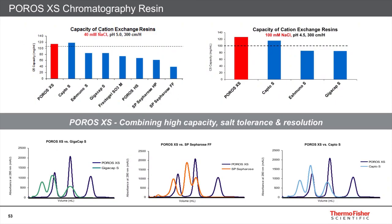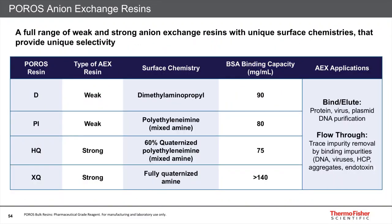We have four anion exchangers on Poros beads too: the PI with polyethylenimine mixed amine surface; the D with a diethylaminopropyl chemistry similar to DEAE; the HQ, which offers both weak and strong functionality by quaternizing the PI to 60%, combining the unique selectivity of weak anion exchangers with the high capacity of strong anion exchangers; and finally the Poros HQ, combining high capacity, high resolution, and salt tolerance up to 15 millisiemens per centimeter into a single product, similarly to the XS.